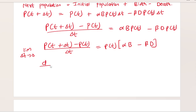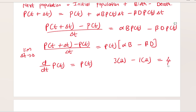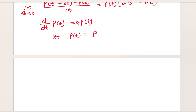Applying the same logic, on the left-hand side we have the derivative. So I can rewrite this as dP/dt of P(t) equals P(t) multiplied by the bracket, which is just a constant — since alpha times B minus beta times D is just a number. I'll call that constant K. For simplicity, let P(t) be represented by P, so I now have dp/dt equals Kp.